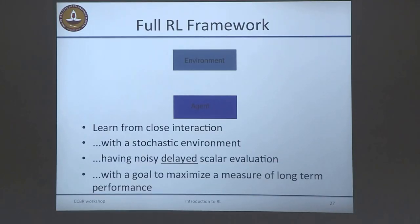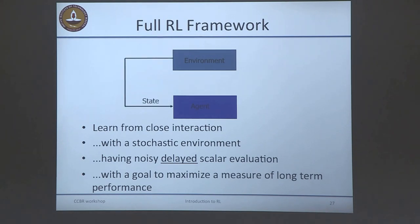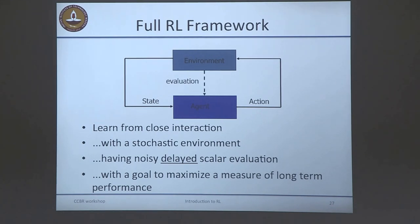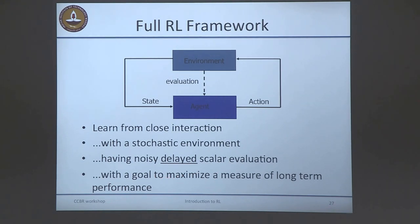Now I'm moving on to the full RL framework. There's an agent and an environment — a monkey pressing levers, a rat running a maze, or a human riding a cycle. The agent senses the state of the environment and takes actions. It gets some kind of payoff or evaluation from the world. The distinguishing features are: it learns from close interaction with a stochastic environment, receives noisy delayed scalar evaluation, and its goal is to maximize a measure of long-term performance.